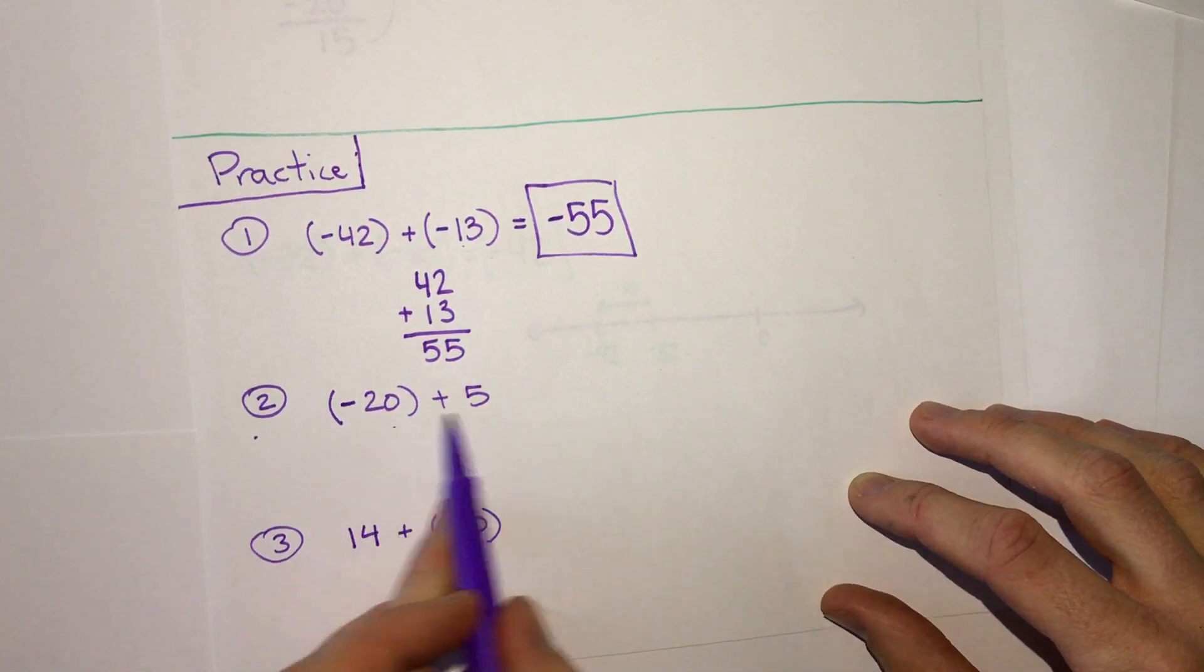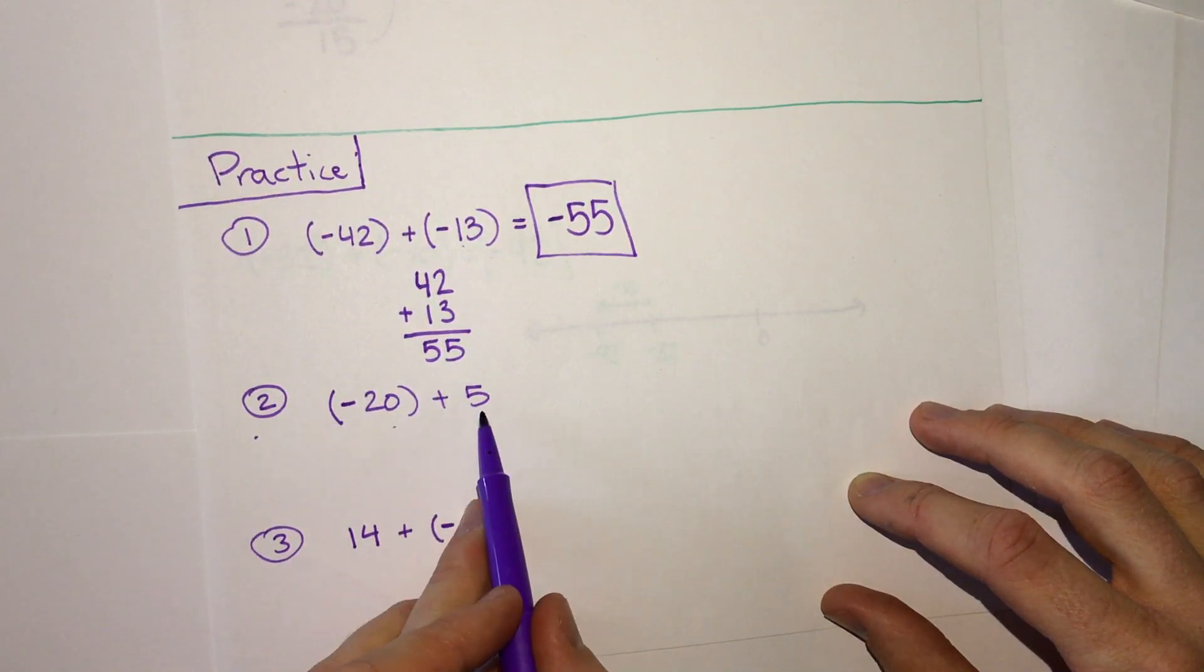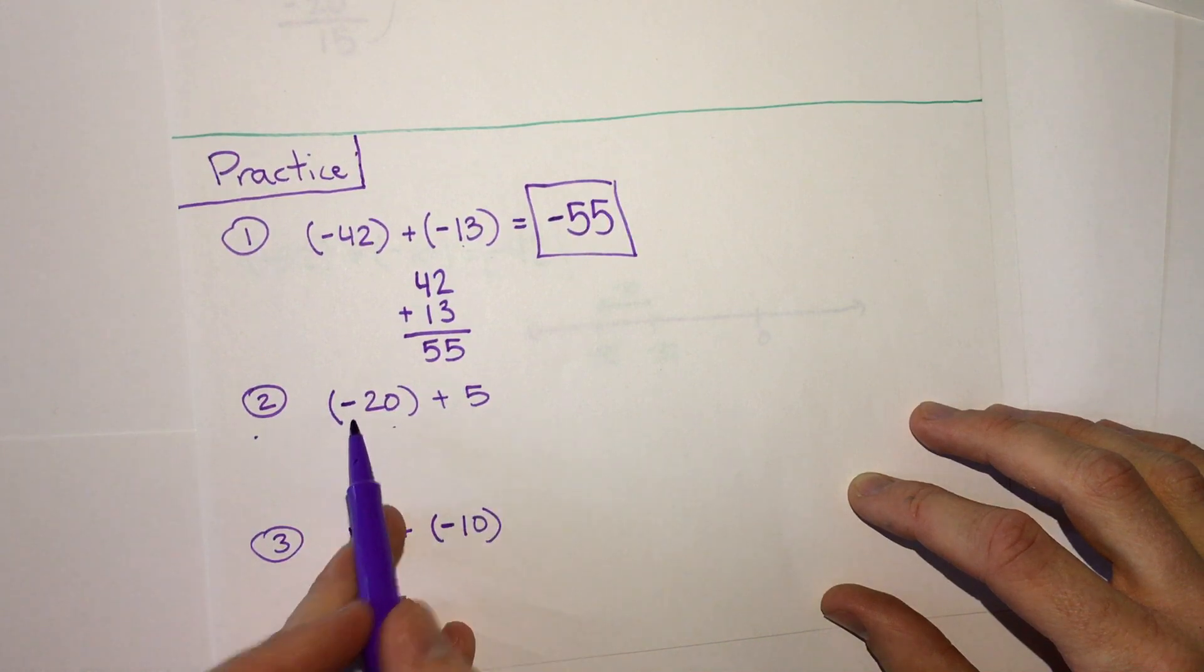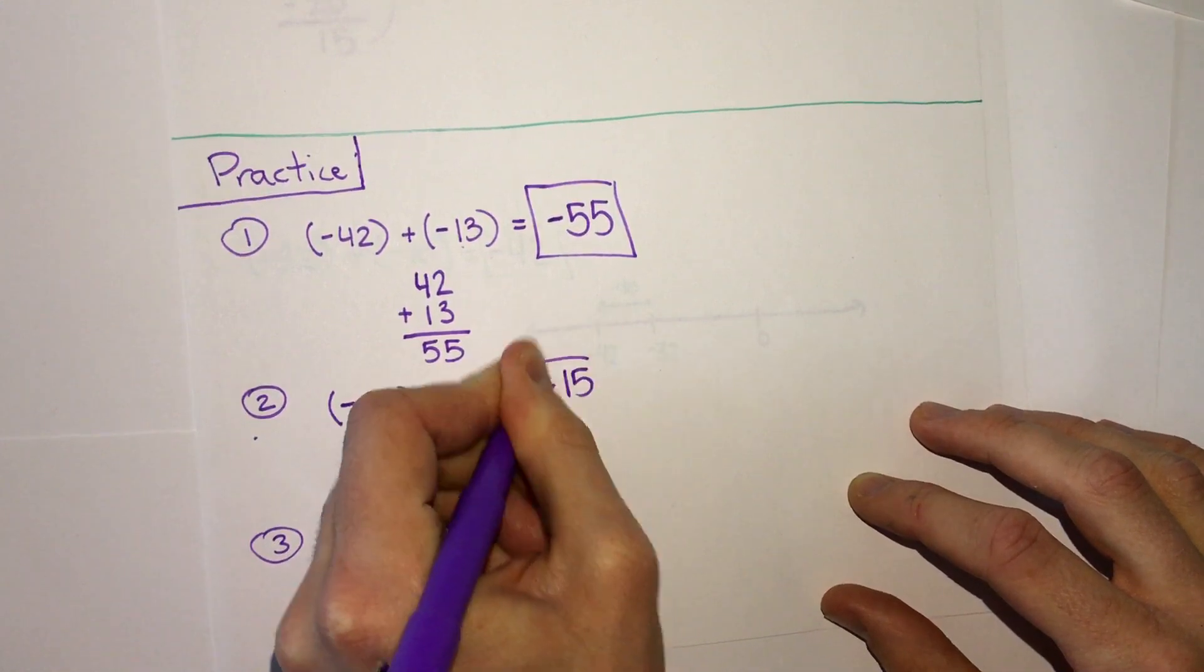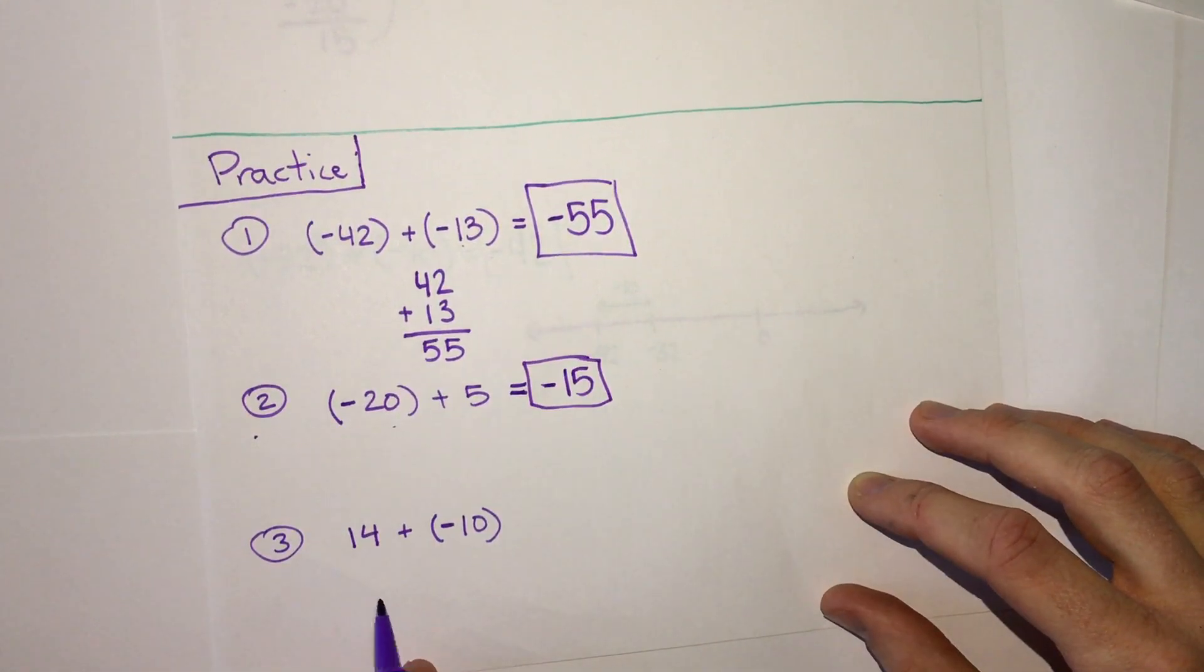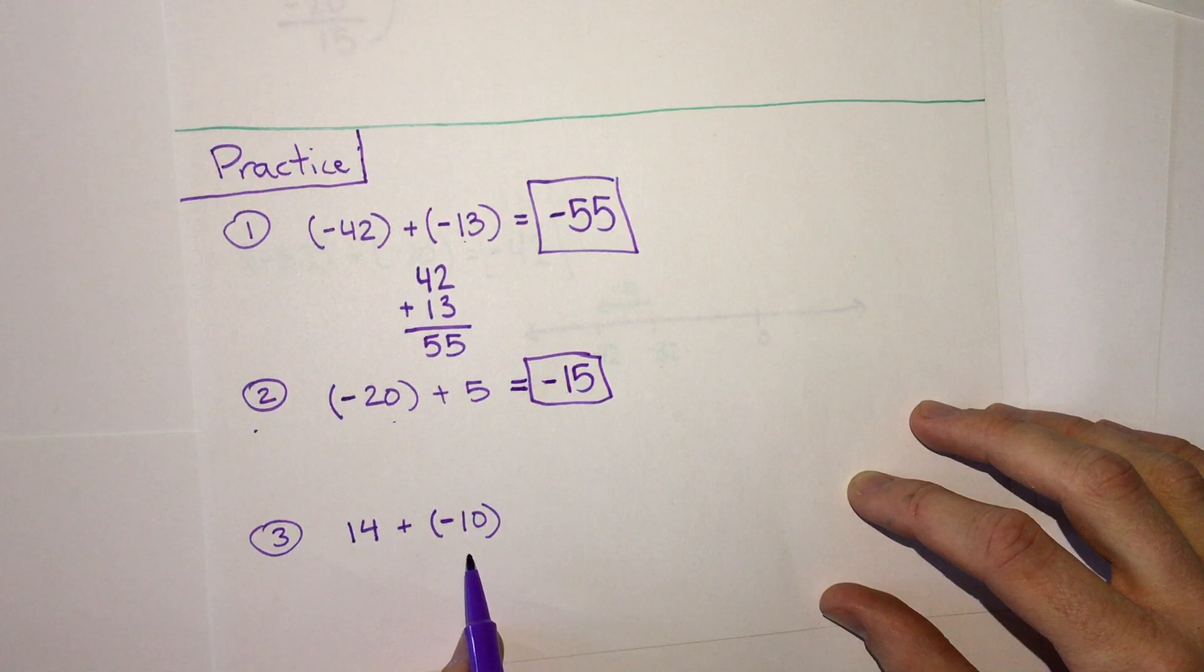Number two: negative 20 plus 5. Because one is negative and one is positive, we can subtract those. 20 minus 5 is 15. The negative one is bigger, so our answer is negative 15.